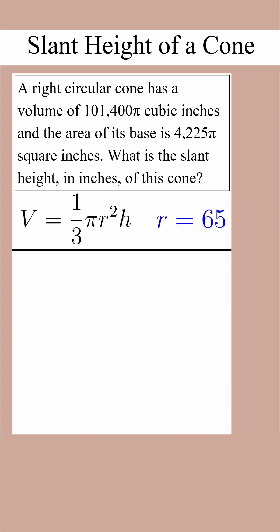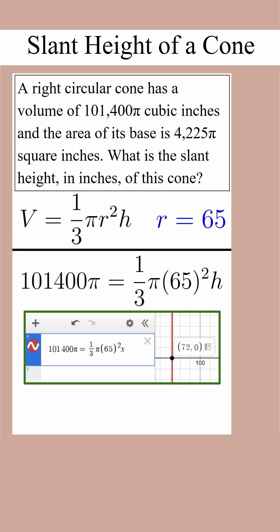Next, we'll take the volume they gave us and the radius we found and plug them into the volume formula. We get 101,400 pi equals one-third pi 65 squared times h. Solving this equation by hand or on Desmos gives us a height of 72.